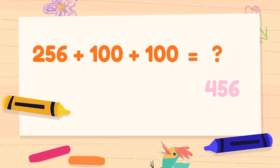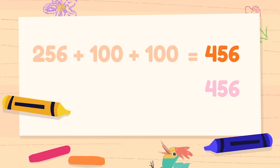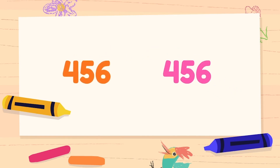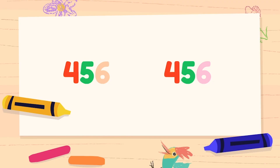First, let's solve 256 plus 100 plus 100. That equals 456! And now we can compare the numbers. The hundreds places are the same. The tens places are the same. And the ones places are the same! That means they are equal! Whoa! What a surprise!